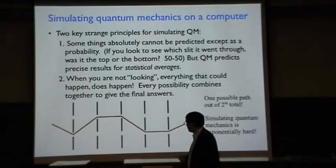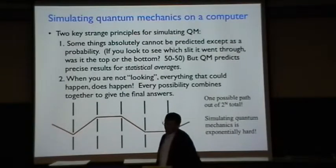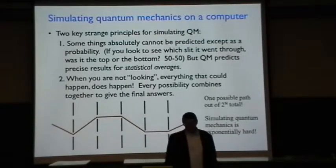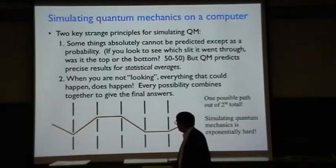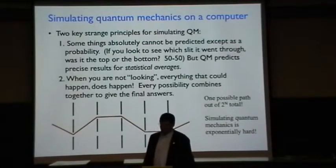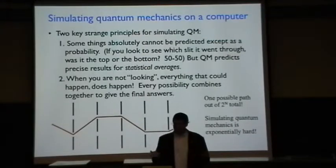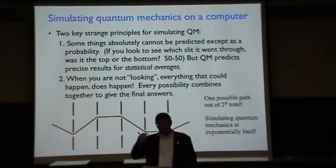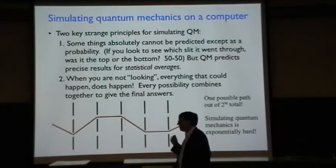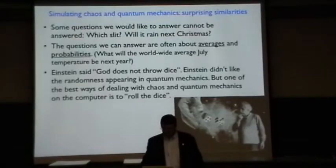For n equals five, that's going to be 32. But for n equals 100, all of a sudden, you can't do it. Simulating quantum mechanics is exponentially hard. You get this amount of work that you have to do to pull out the answer. At least if you do it in the simplest way, it is growing exponentially with the size of the system, just like for chaos. That's one of the things they have in common.